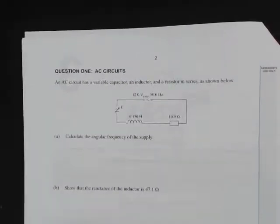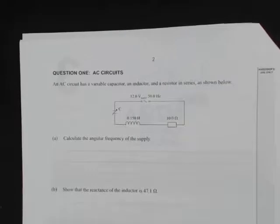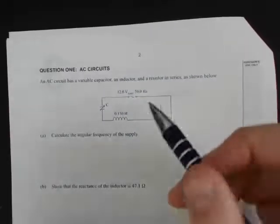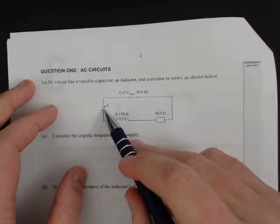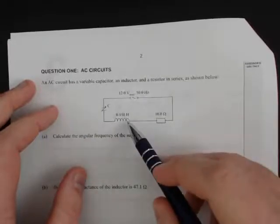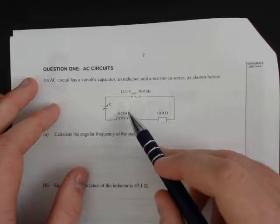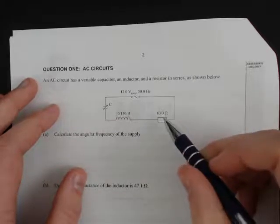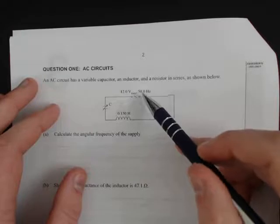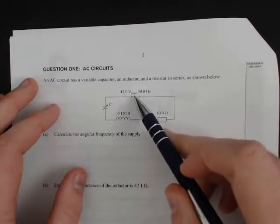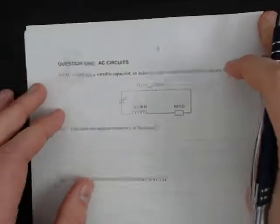An AC circuit has a variable capacitor, an inductor, and a resistor in series as shown by the circuit below. Here we have our variable capacitor of unknown capacitance, our inductor with an inductance of 0.150 Henrys, our resistor of 10 ohms running at 50 Hertz, and a voltage of 12 volts RMS, which is essentially the average voltage.